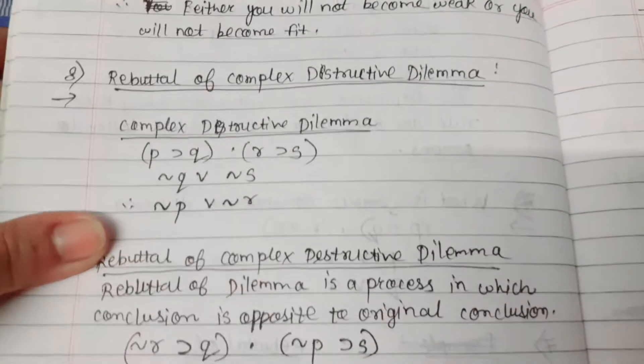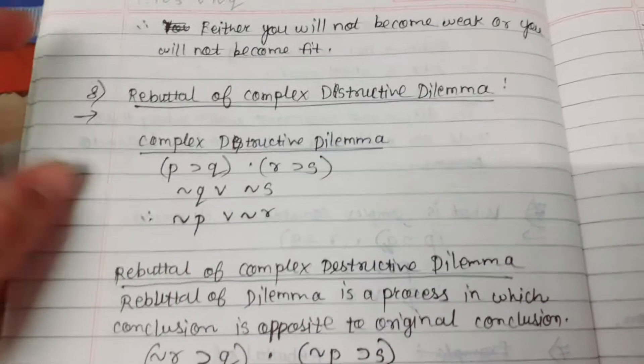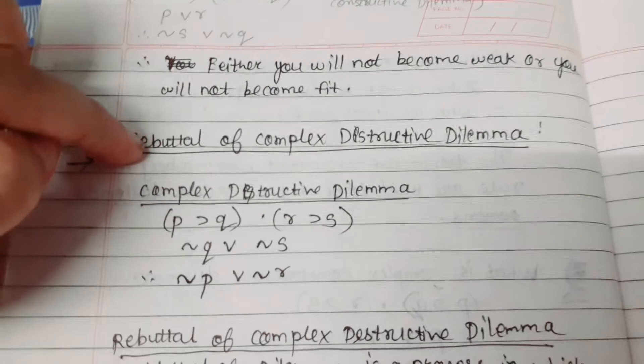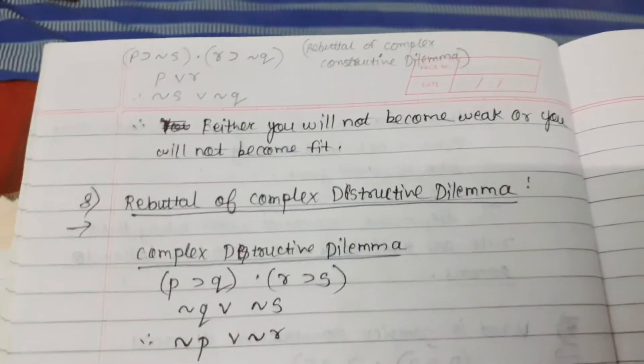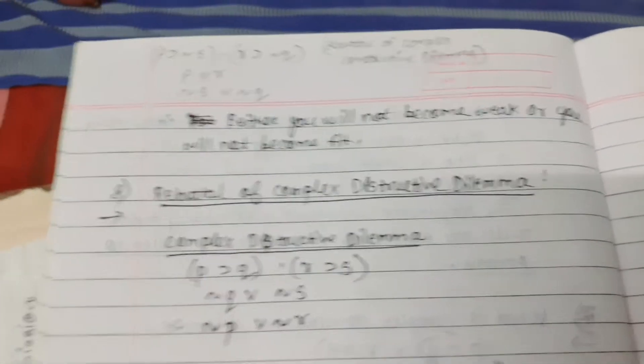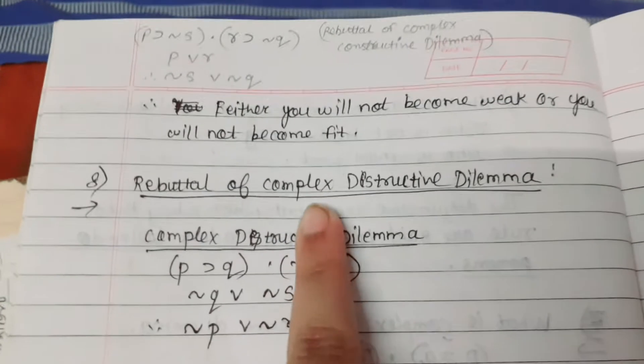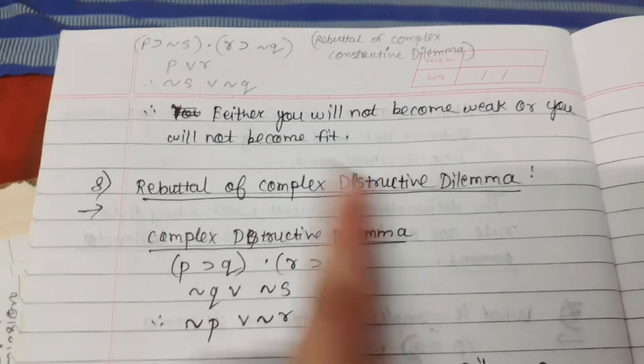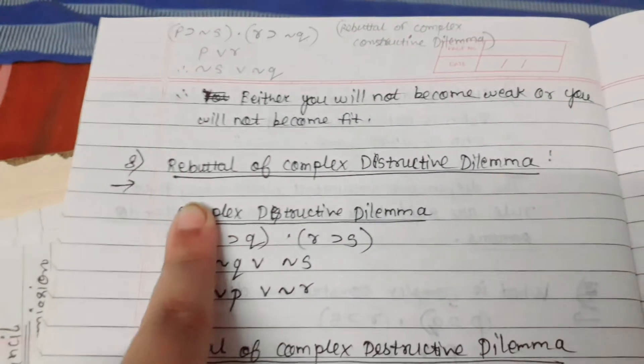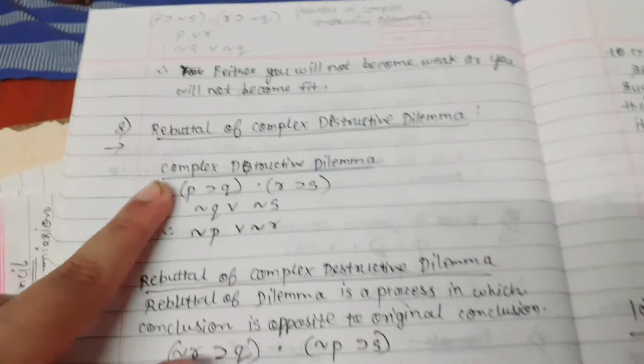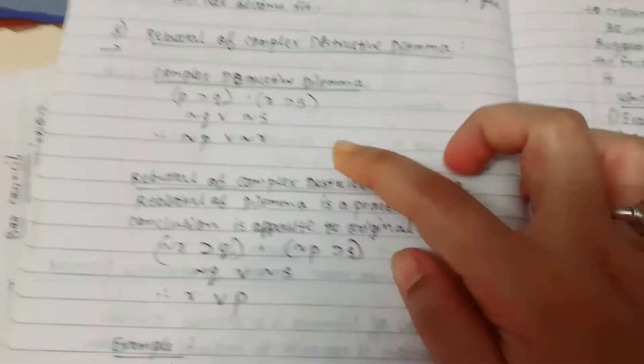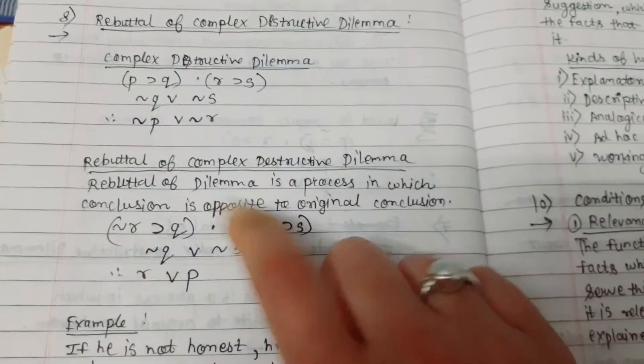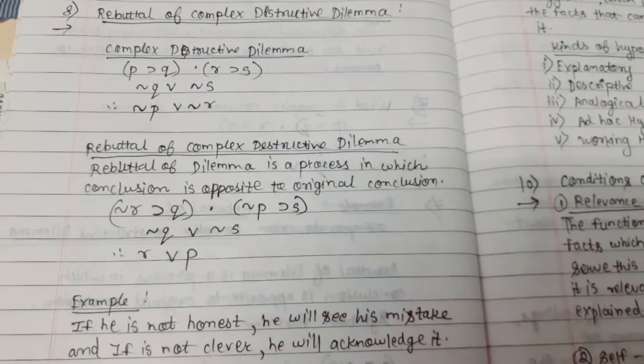Then Rebuttal of complex destructive dilemma. While doing Rebuttal, first we should know the main form, the main structure of complex destructive dilemma. Then we will be able to do the Rebuttal of complex destructive dilemma. This is the main structure. And from that we have to make the Rebuttal of complex destructive dilemma.